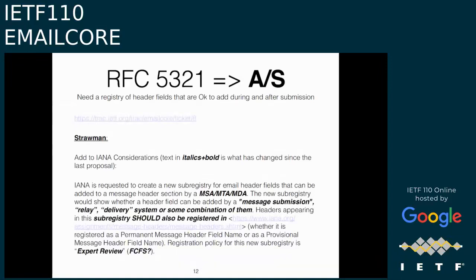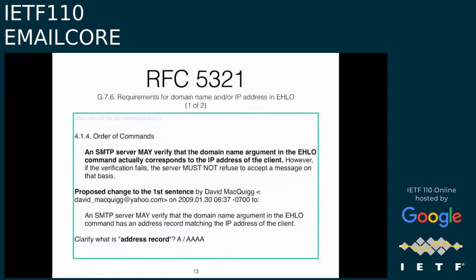If there are no further comments, let's move on — we seem to be getting closure on this one. Alexi will propose the latest text on the mailing list and hopefully close this ticket. Murray noted: when proposing the text, make sure to include instructions to the expert reviewer along the lines John described — there should be grounds to refuse registration of something like Subject or Content-Type as a trace header field, but otherwise just register it.